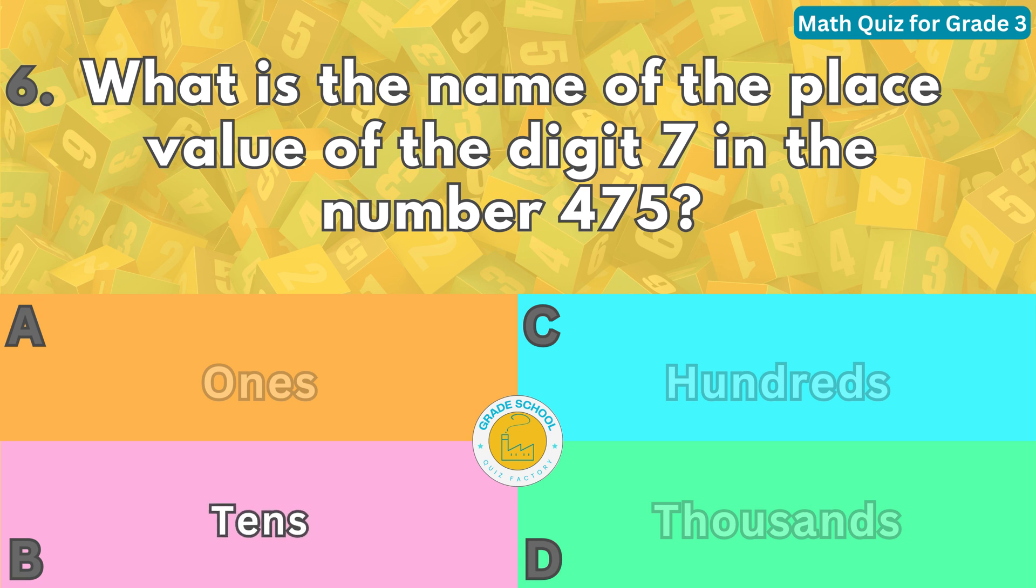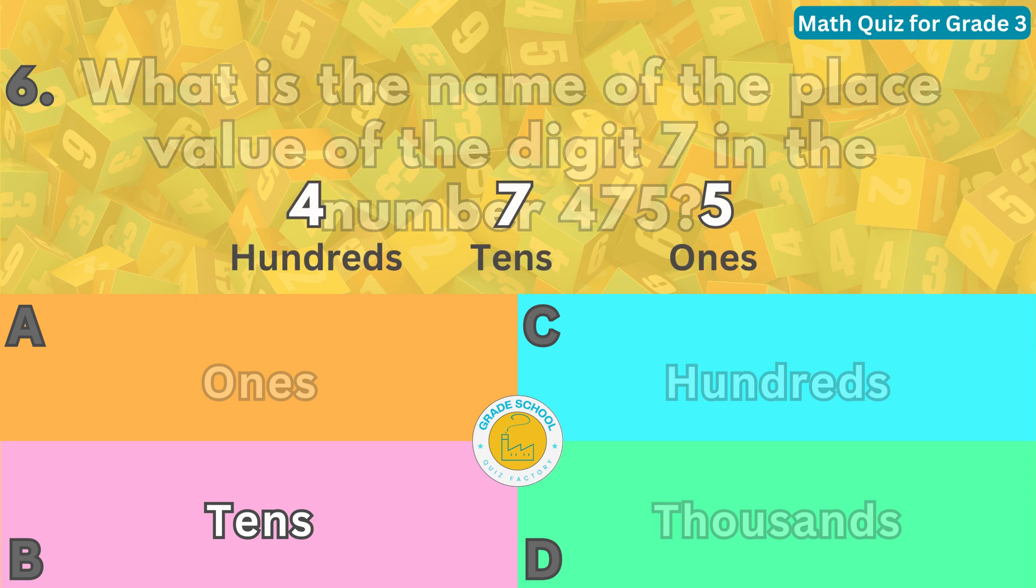The place value of a digit in a number depends on its position from the right. The ones place is the first position, the tens place is the second position, the hundreds place is the third position, and so on. In the number 475, the digit seven is in the second position from the right, which is the tens place.